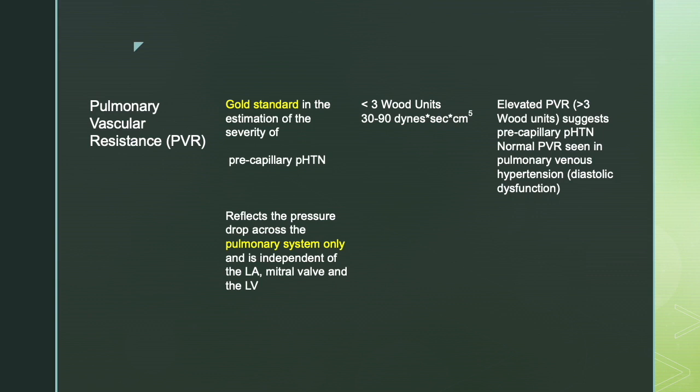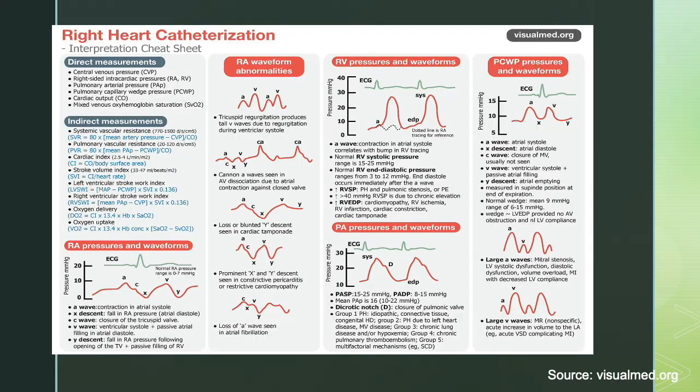Pulmonary vascular resistance, or PVR, is the gold standard when estimating pre-capillary pulmonary hypertension, as discussed in the previous session. It reflects the pressure drop across only the pulmonary system. When discussing the pulmonary system in isolation, PVR is a better measurement than pulmonary capillary wedge pressure. If PVR is increased, it reflects pre-capillary pulmonary hypertension, and it can also be increased in pulmonary venous hypertension.